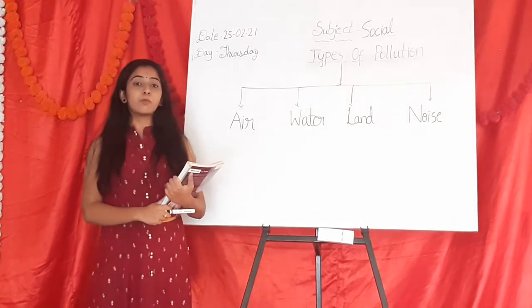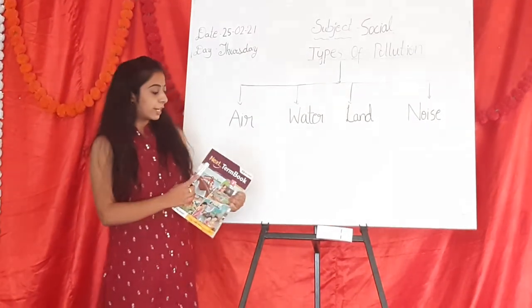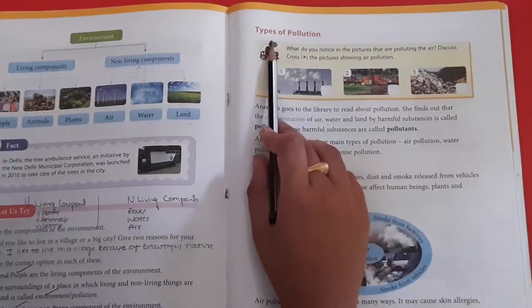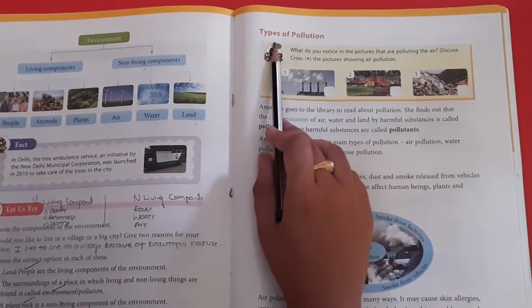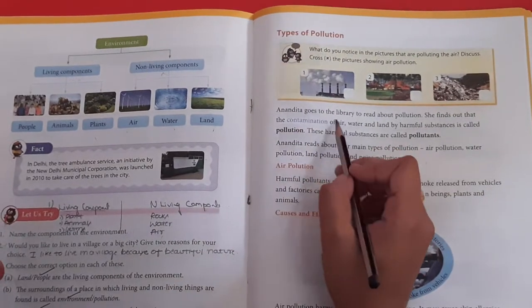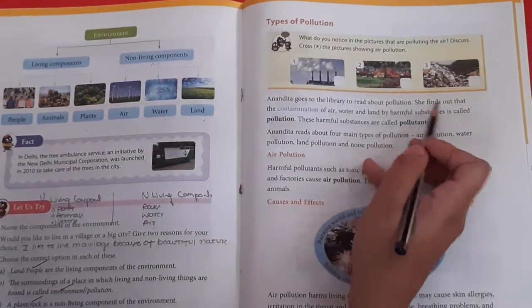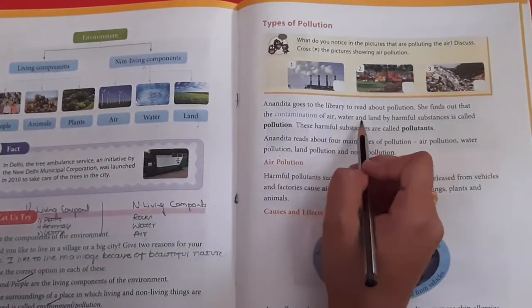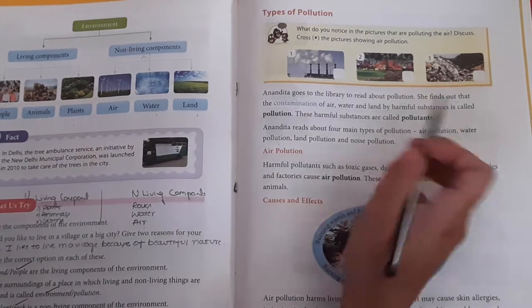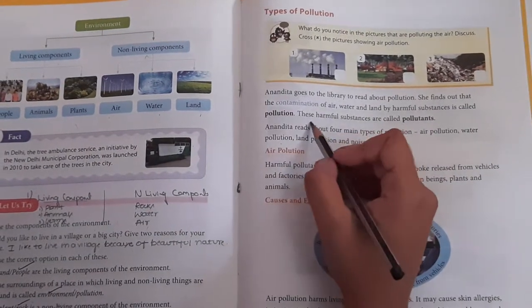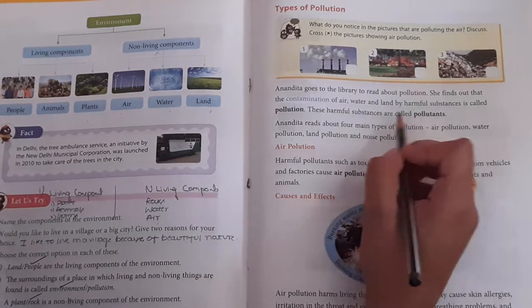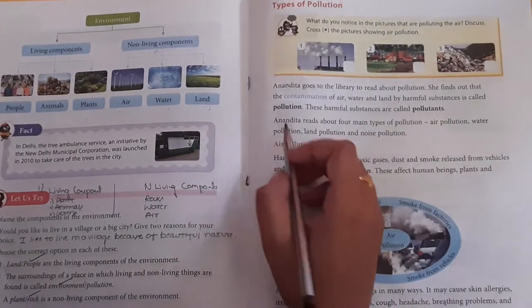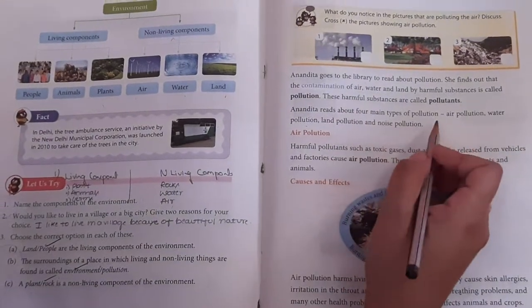Now, to learn more about types of pollution, we shall go through the next term in Book 3. Turn to Book A: Types of pollution. Anandita goes to the library to read about pollution. She finds out that the contamination of air, water and land by harmful substances is called pollution. These harmful substances are known as pollutants. Anandita reads about four main types of pollution.